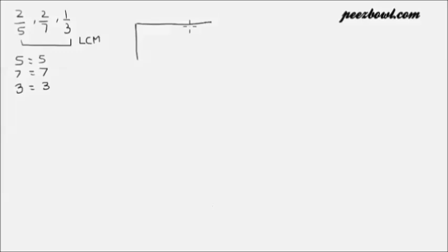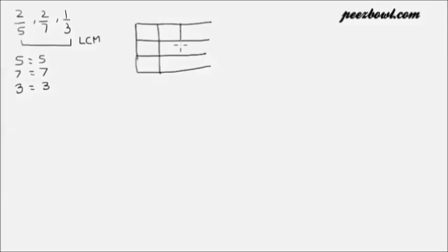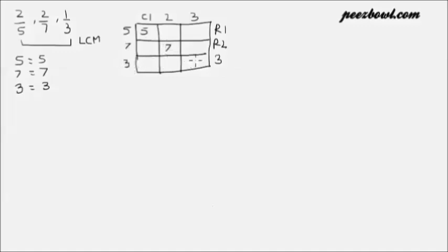Let us write all these prime factors in a table which has 3 rows and 3 columns. This is row number 1, row number 2, and row number 3. Vertically, this is column number 1, column number 2, and column number 3. In the first row, let us write all the prime factors of 5, that is 5. In the second row, write all the prime factors of 7, and in the third row, write all the prime factors of 3, that is only 3.